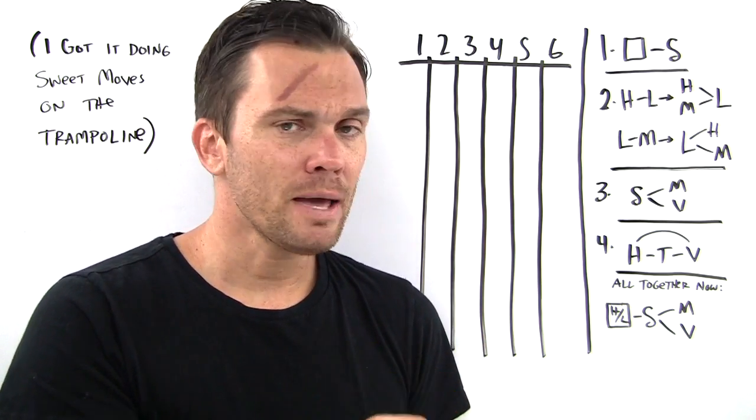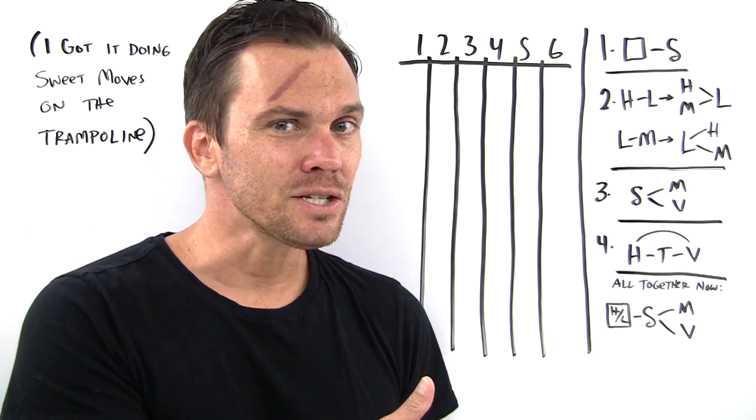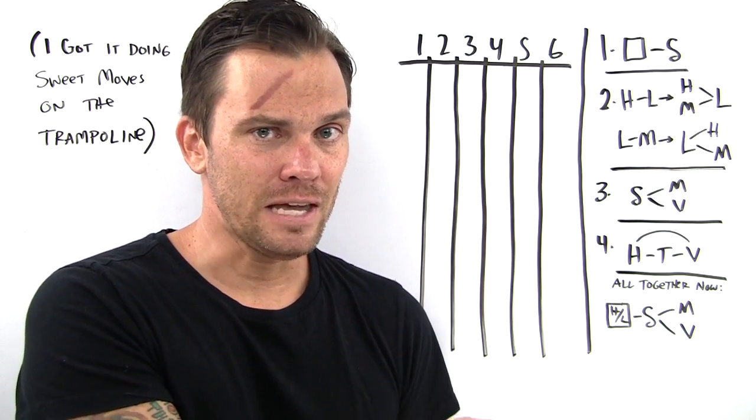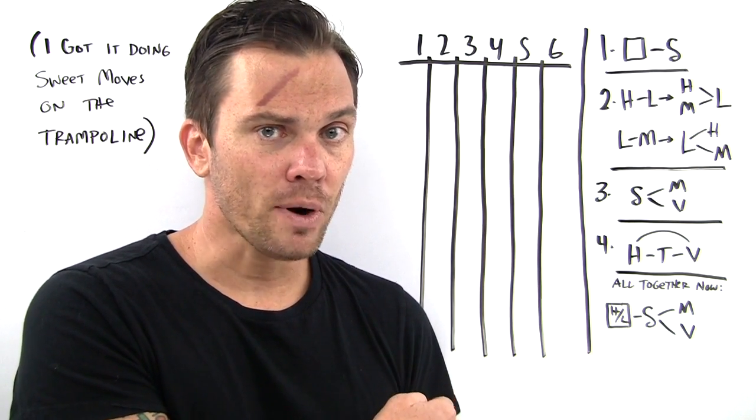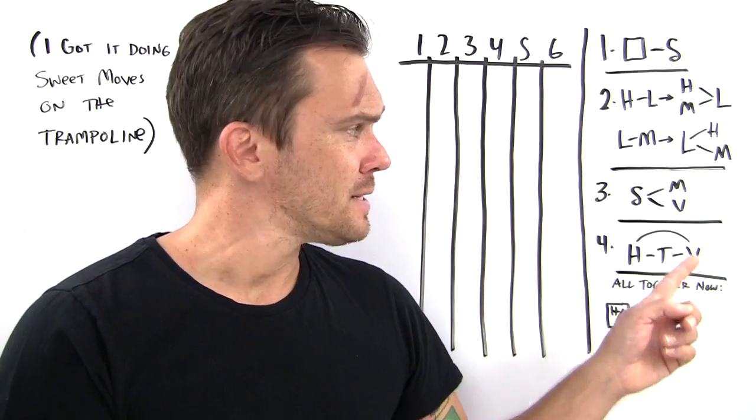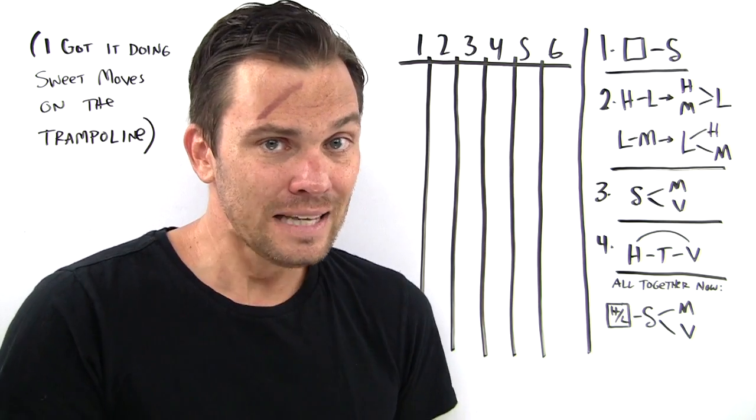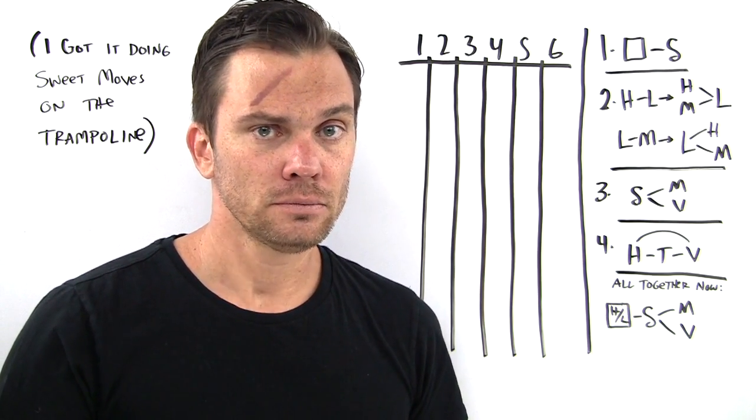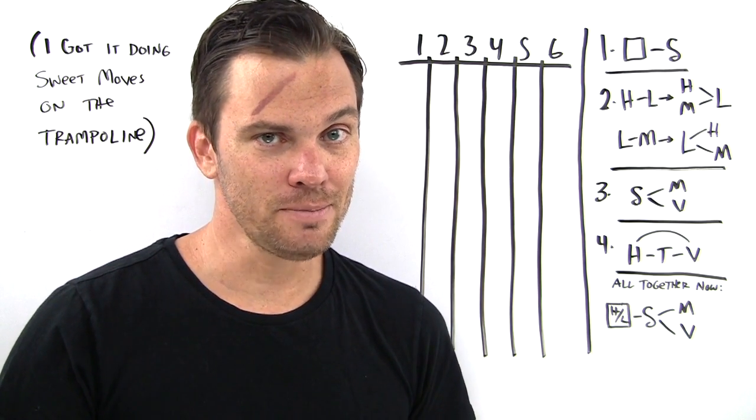we see that S is before M and V. I don't know where T is going to go on either side of V, right? But that thing before S, it's not T. T can't be first. Got something before it. It's not M and V. So that leaves only H or L. Process of elimination.